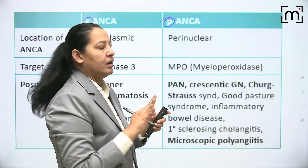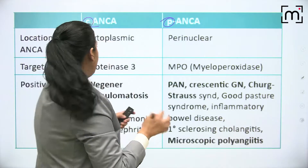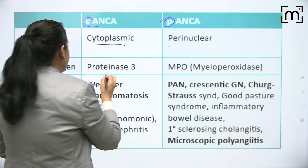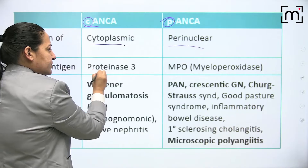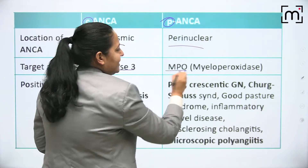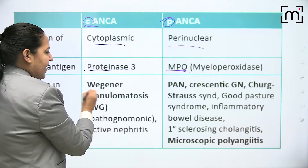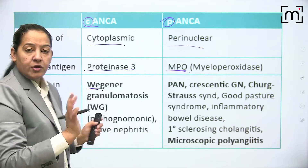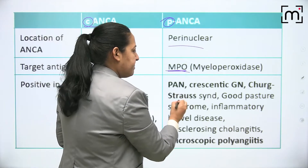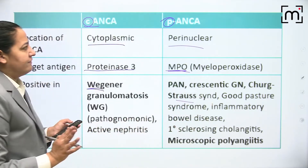The target antigen for c-ANCA is proteinase 3, and for p-ANCA the target antigen is MPO - myeloperoxidase. C-ANCA is positive in Wegener's; on the contrary, p-ANCA is positive in PAN, microscopic PAN, and Churg-Strauss. These are the important diseases in which they are positive.